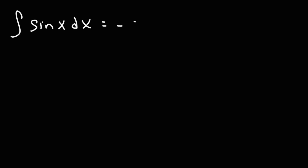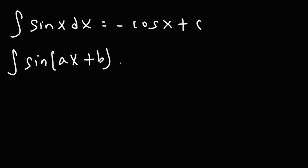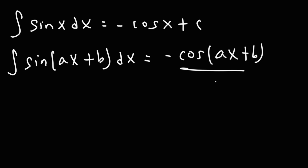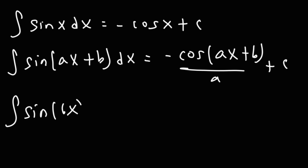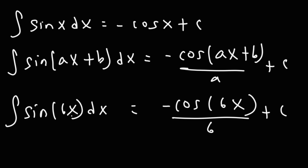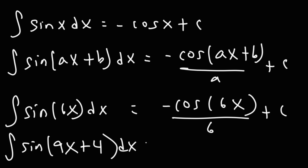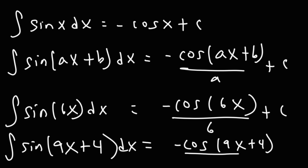For trig functions: the integral of sine x dx is negative cosine x plus c. The integral of sine of ax plus b dx is negative cosine of ax plus b divided by a, plus c. For example, the antiderivative of sine 6x is negative cosine 6x divided by 6, plus c; and the integral of sine 9x plus 4 is negative cosine of 9x plus 4 divided by 9, plus c.